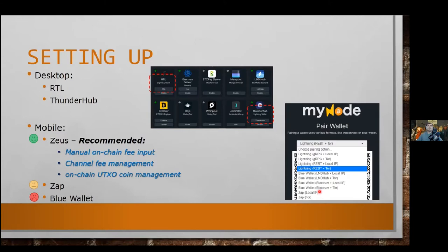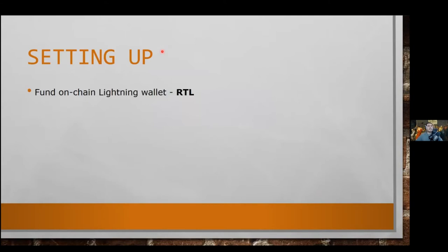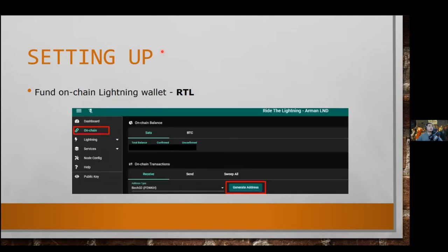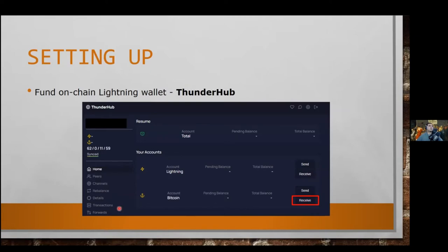Now let's go ahead and fund our lightning on-chain wallet. First you need to fund your on-chain wallet on your lightning node, and then once funded you can start creating channels and transferring sats to the lightning network. From RTL, go to the Lightning section, click on On-Chain, and generate a SegWit or legacy address. In ThunderHub, on the home screen under Bitcoin, click Receive, choose the address type, and fund it.